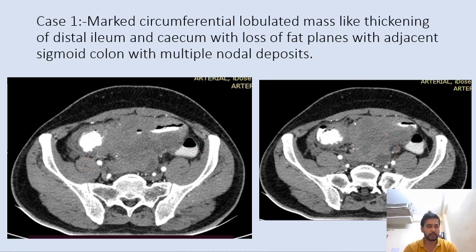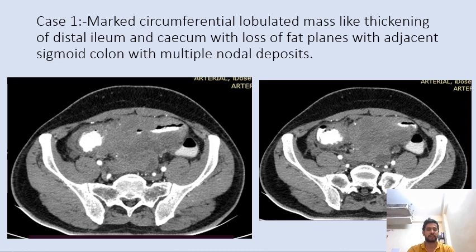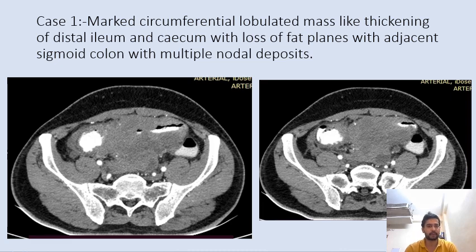Nodal deposits are common in gastrointestinal lymphomas. The deposits in GIST are not this large and are comparatively less common than in gastrointestinal lymphomas.